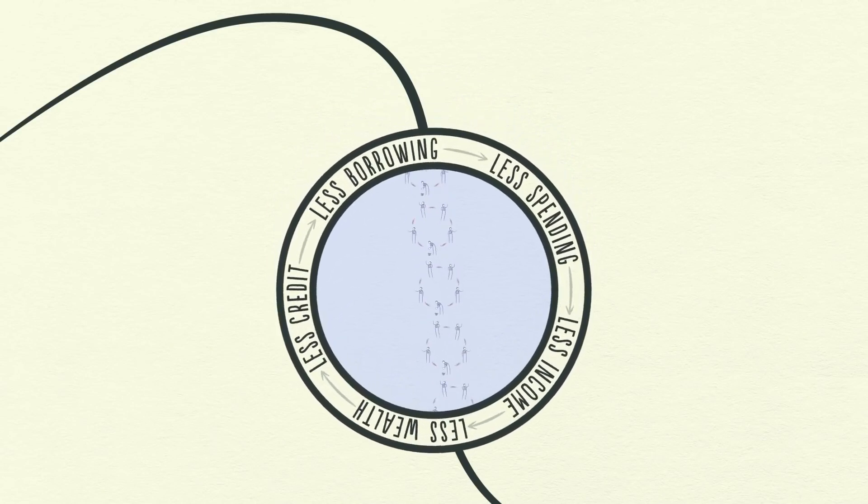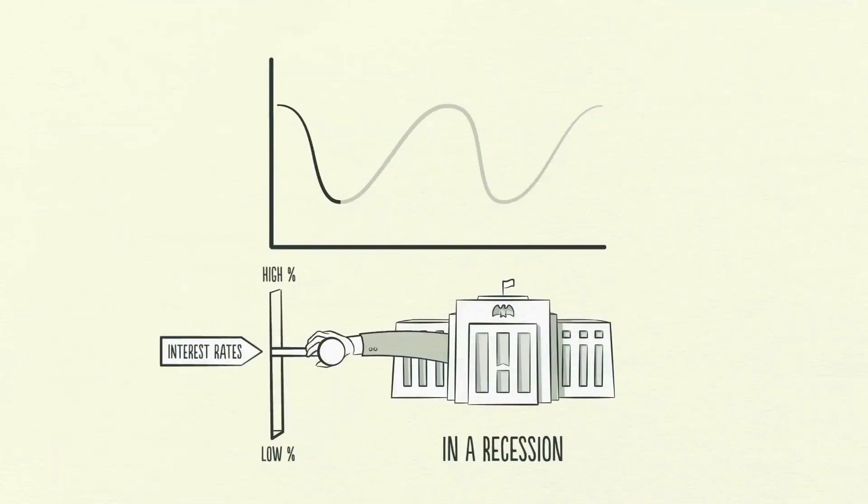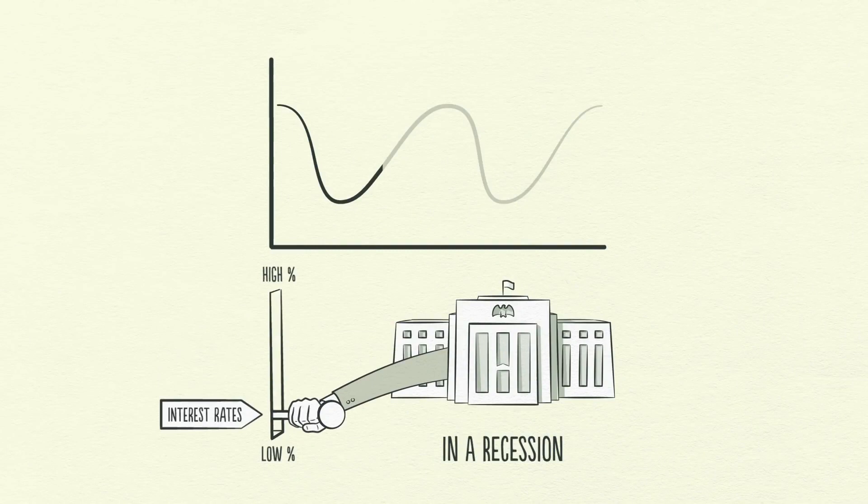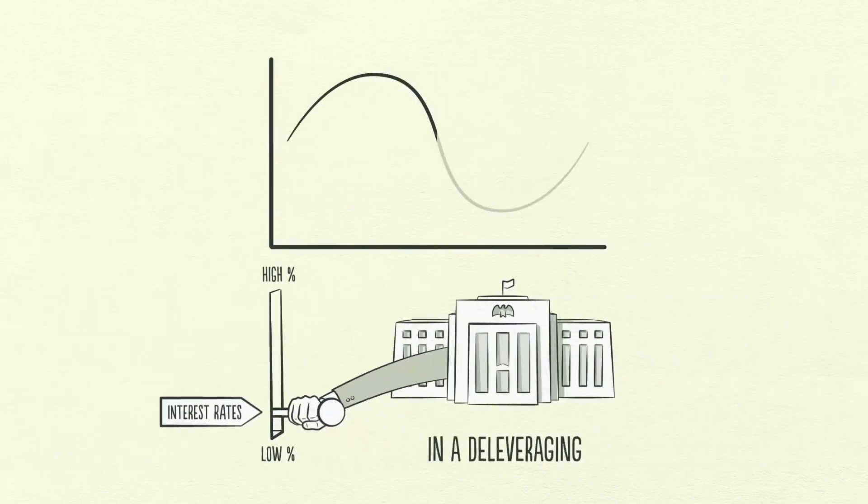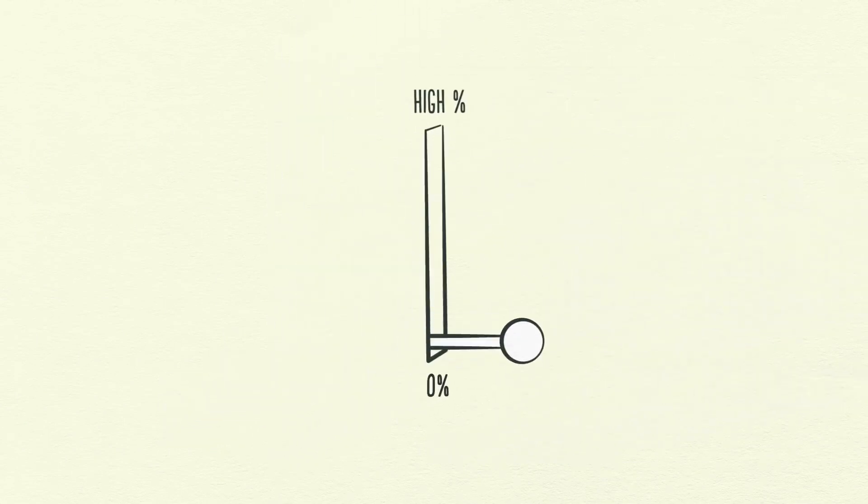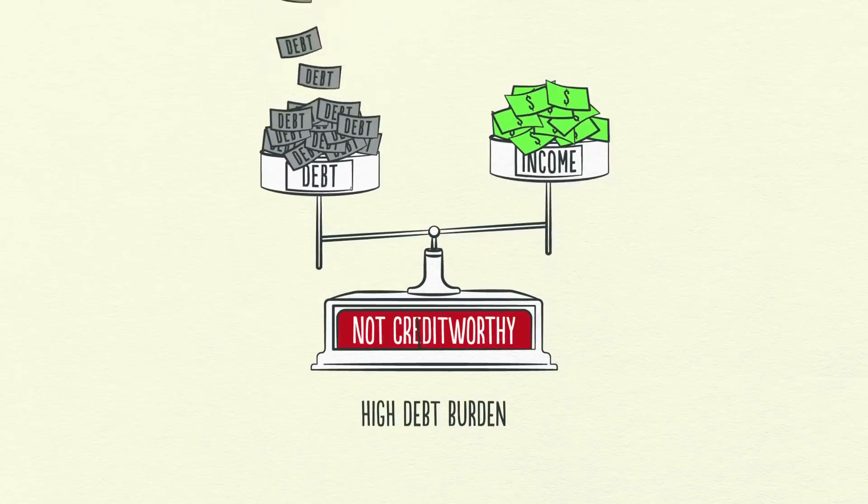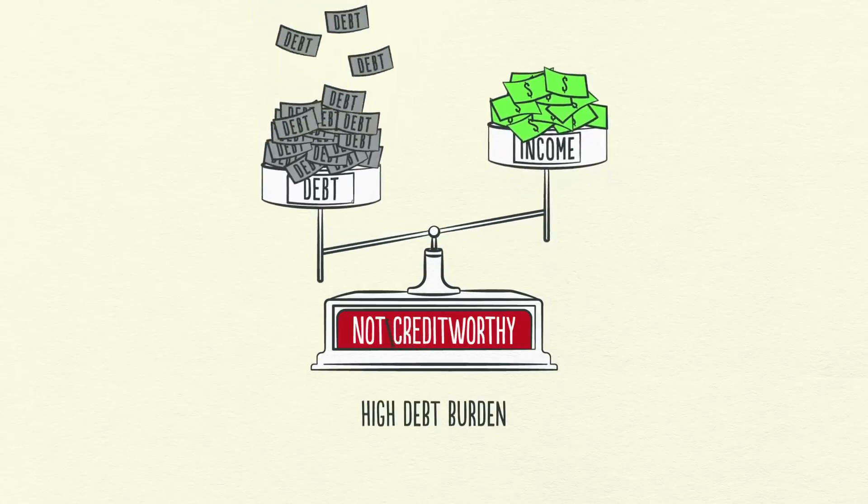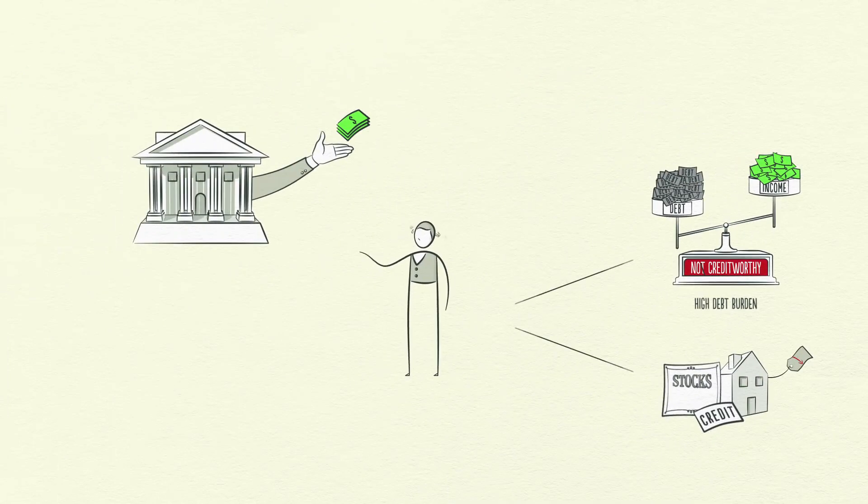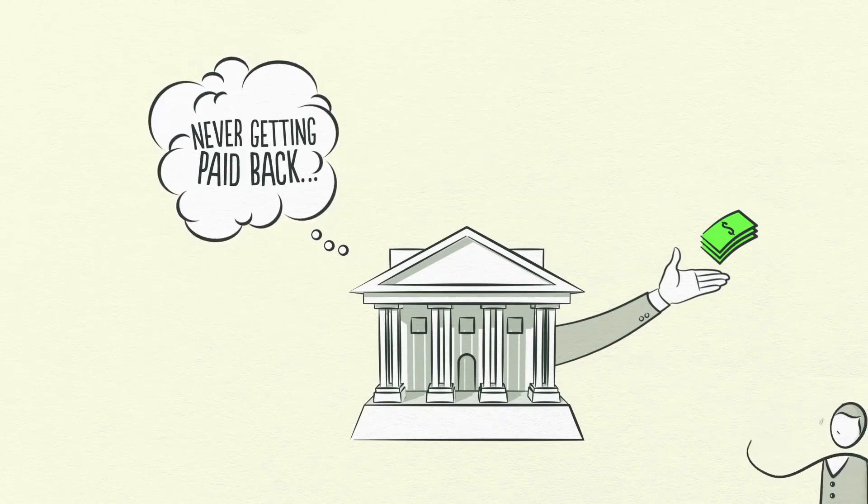This appears similar to a recession, but the difference here is that interest rates can't be lowered to save the day. In a recession, lowering interest rates works to stimulate borrowing. However, in a deleveraging, lowering interest rates doesn't work because interest rates are already low and soon hit 0%, so the stimulation ends. Interest rates in the United States hit 0% during the deleveraging of the 1930s and again in 2008. The difference between a recession and a deleveraging is that in a deleveraging, borrowers' debt burdens have simply gotten too big and can't be relieved by lowering interest rates. Lenders realize that debts have become too large to ever be fully paid back.